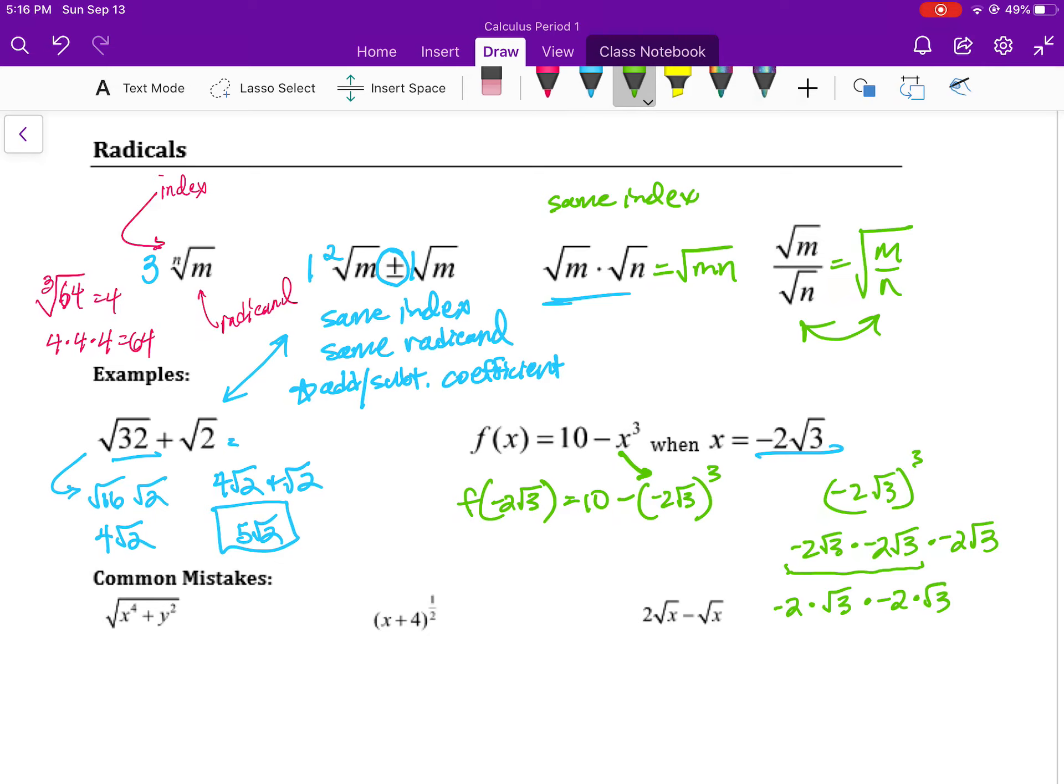Remembering that negative 2 root 3 is just a way of saying negative 2 times root 3 is helpful because that reminds us that multiplication can happen in any order we want and we will get the same answer. So we are allowed to multiply those coefficients: negative 2 times negative 2 is 4, and then multiply the two radicals: root 3 times root 3 is 3, giving us 12. And now we want to do 12 times negative 2 root 3, giving us an answer of negative 24 root 3.